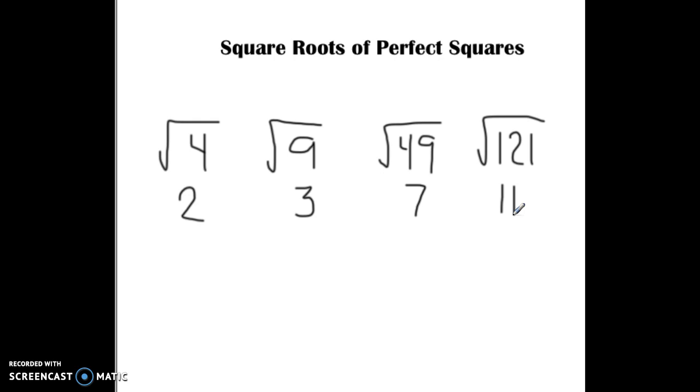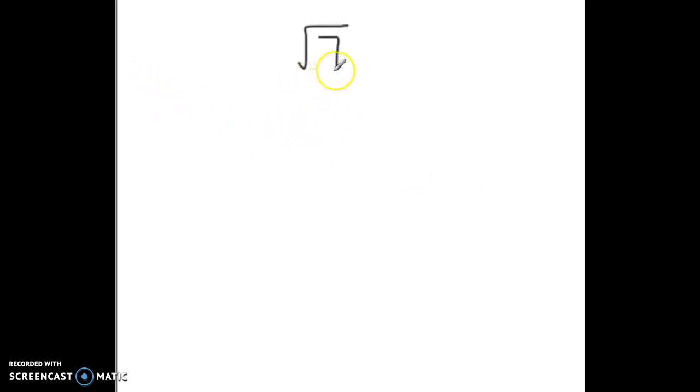You may be saying, okay, that's pretty easy. But what happens when it doesn't come out even? What if it's the square root of 7? I don't know what number times itself comes out to be 7. So I have to look at the perfect squares on either side of it.